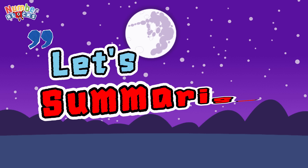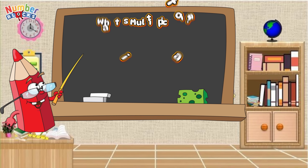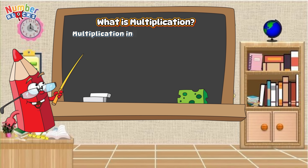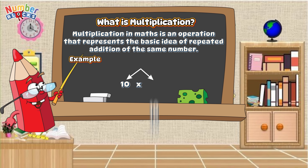And now, let's summarize. Let's define first, what is multiplication? Multiplication in math is an operation that represents the basic idea of repeated addition of the same number. Here is an example: 10 and 10 are called factors. 10 is the multiplicand and the other 10 is the multiplier, and 100 is the product.